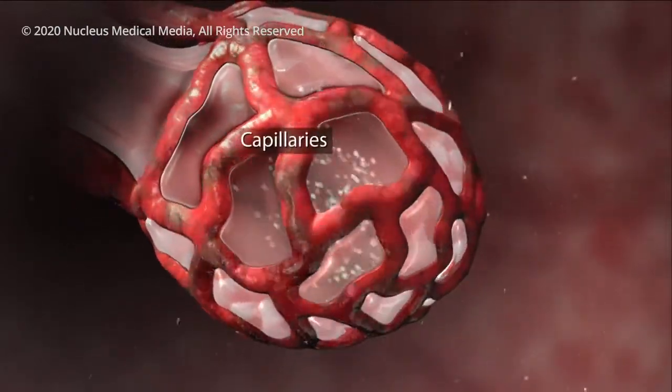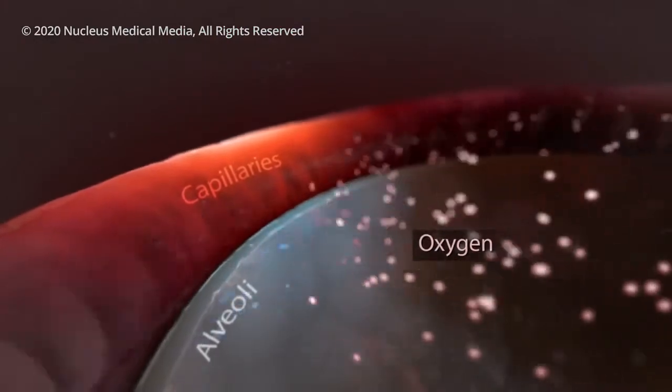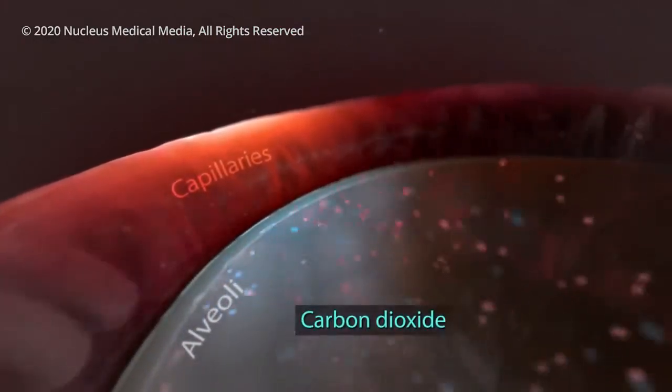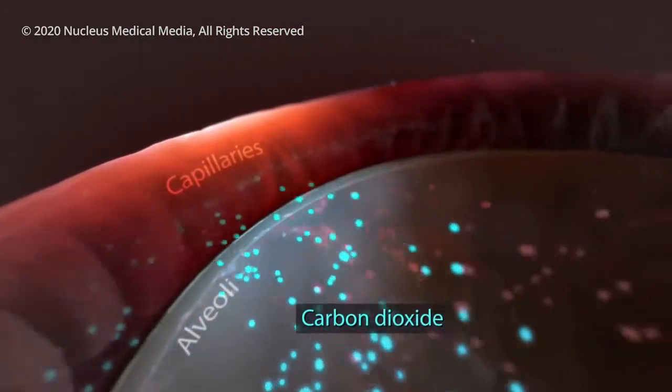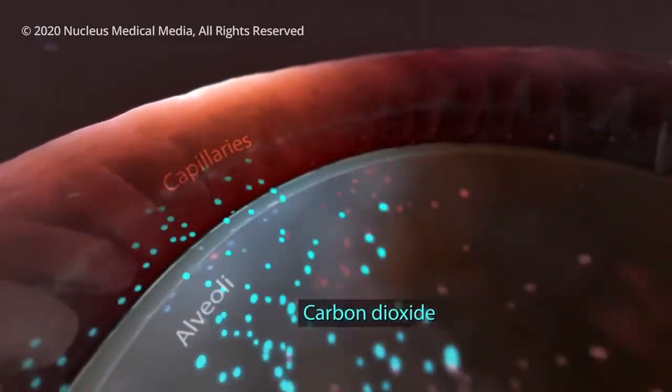Small blood vessels called capillaries surround your alveoli. Oxygen from the air you breathe passes into your capillaries, and then carbon dioxide from your body passes out of your capillaries into your alveoli so that your lungs can get rid of it when you exhale.